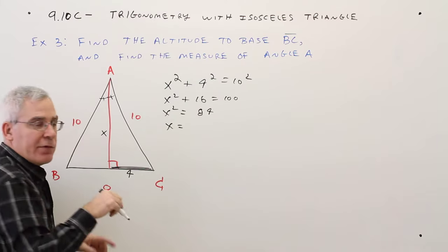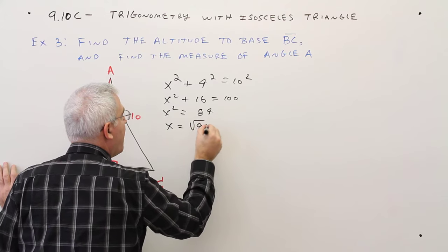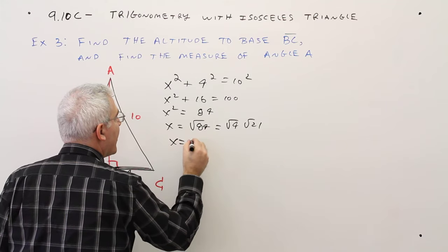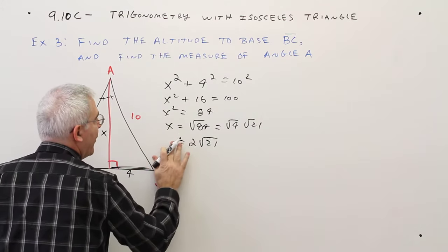x equals, I'll just take the positive square root. The square root of 84, which is the same thing as the square root of 4 times the square root of 21. So x equals 2 radical 21. So I'll call that the altitude.